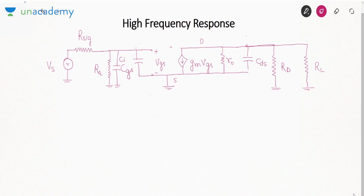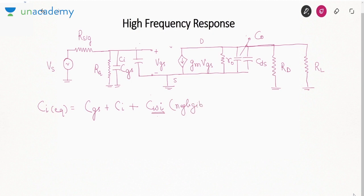We remove capacitance CGD and resolve it into two capacitances: Ci at the input and Co at the output. The equivalent input capacitance is CGS + Ci plus wire capacitance (which is negligible and can be ignored). The output capacitance is CDS + Co plus wire capacitance at the output.